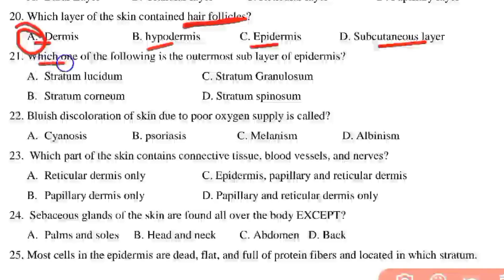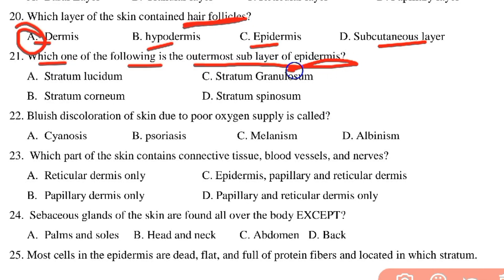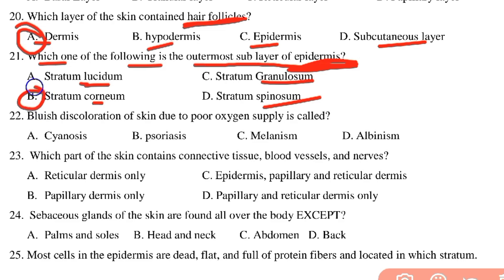Which is the outermost layer of the epidermis? The layers of the epidermis from deep to superficial are: stratum basale, stratum spinosum, stratum granulosum, stratum lucidum, and stratum corneum. The outermost layer is the stratum corneum.